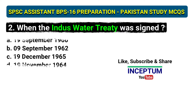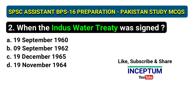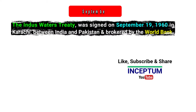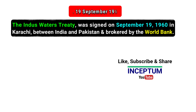Question 2: When was the Indus Water Treaty signed? Options: 19th September 1960, 9th September 1962, 19th December 1965, 19th November 1964. The correct answer is option A, 19th September 1960. The Indus Water Treaty was signed on 19th September 1960 in Karachi, between India and Pakistan, and was brokered by the World Bank.